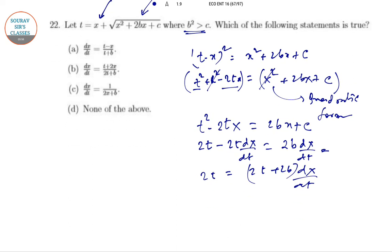Therefore, dx/dt = 2t/(2t + 2b) = t/(t + b). Hence, in this case, the answer is option D: none of the above. Thank you.